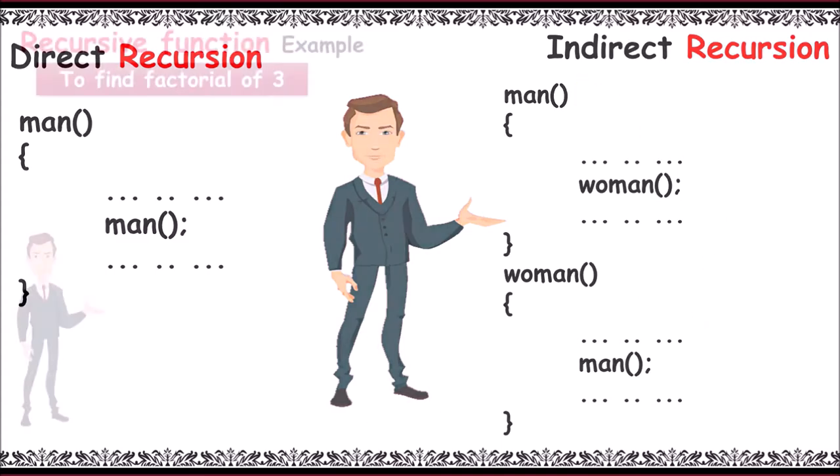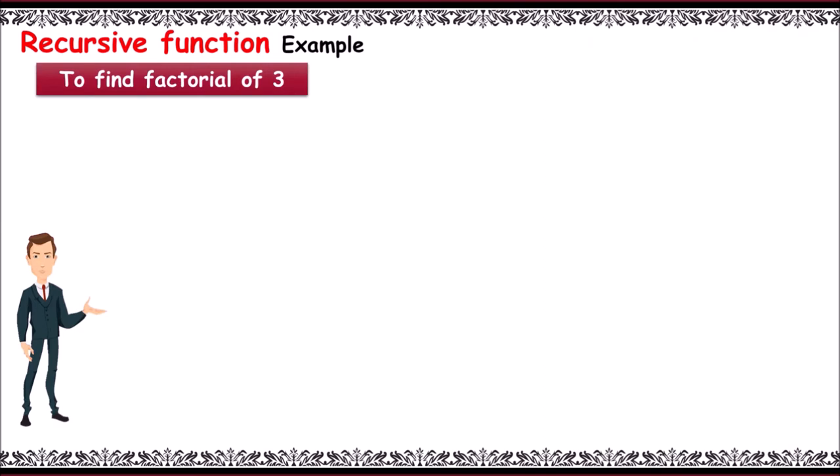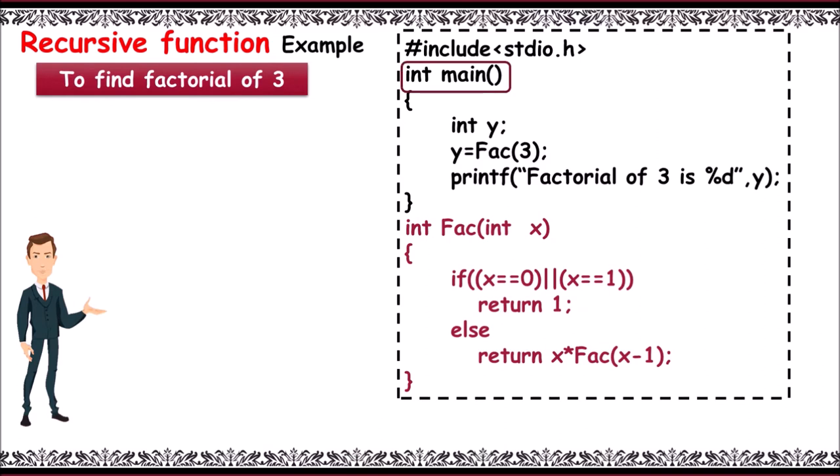Let us write a recursive function program to find the factorial of 3. Here we go. First main, and declare y to store result. Y is equal to fact of 3. Value 3 is sent using function call fact.